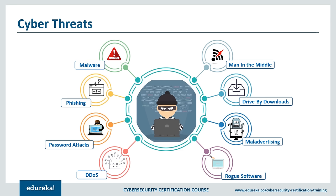Next up we have drive-by downloads — through malware on a legitimate website, a program is downloaded to a user's system just by visiting the site, without requiring any action by the user. Next up we have malvertising, which is a way to compromise your computer with malicious code that is downloaded to your system when you click on an affected ad. Lastly, we have rogue software — malware masquerading as legitimate and necessary security software that will keep your system safe.